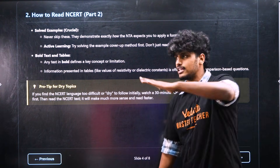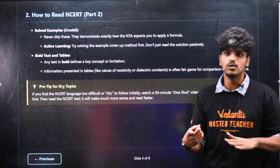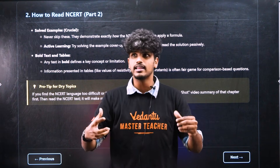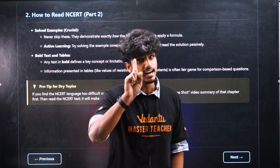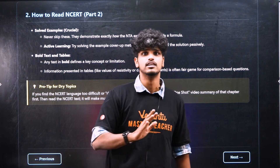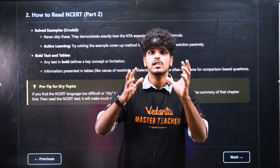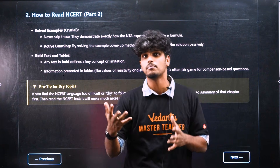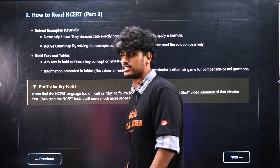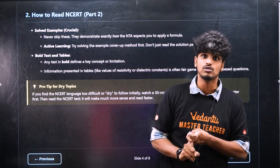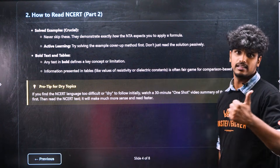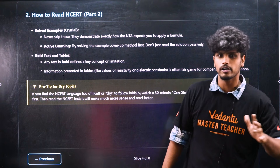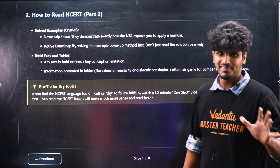That is the cover-up method. Three examples — cover up the solution, try it yourself. How do you solve the sum? How to solve bold text — that is a key vision. If there is a limitation, there is all information in tables, for example resistivity values, dielectric constants. It is fair game.